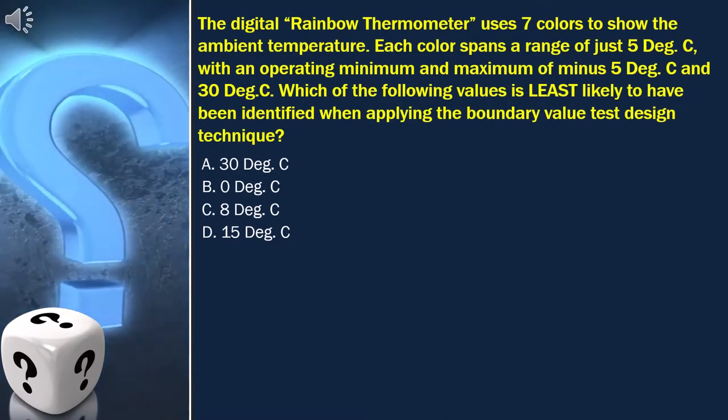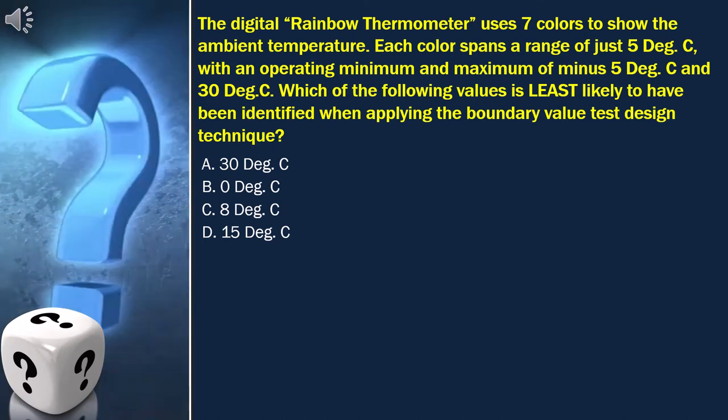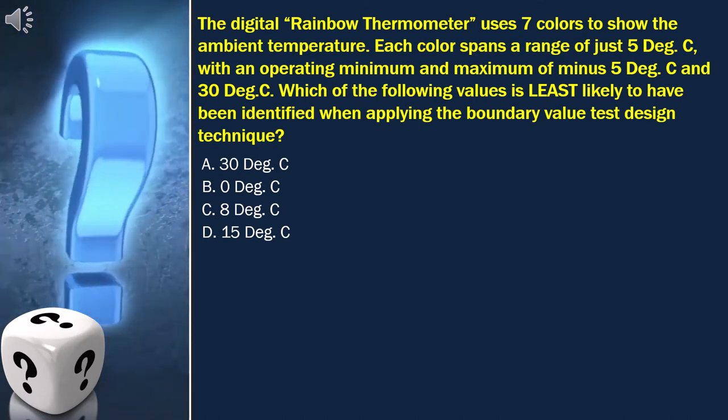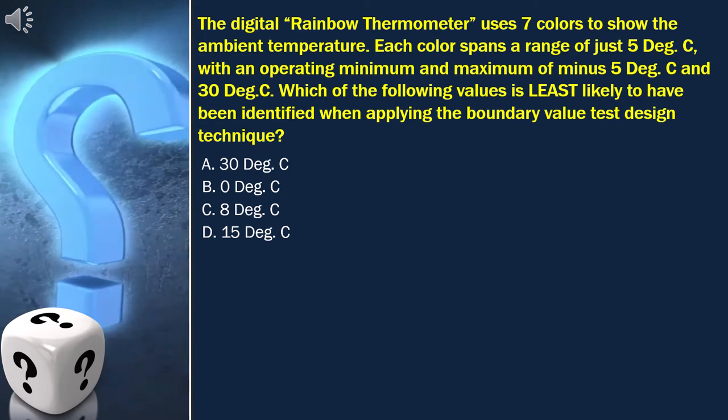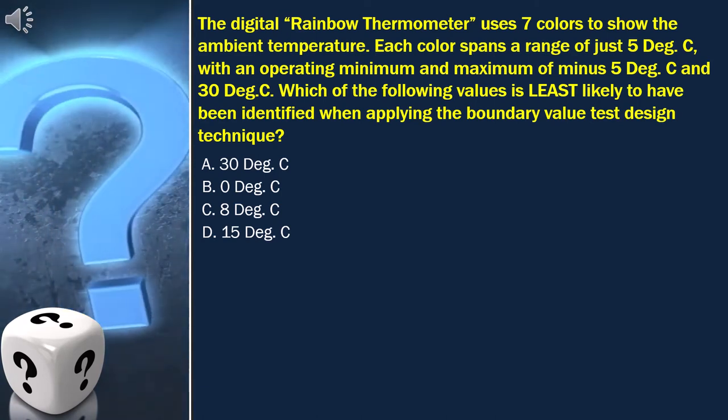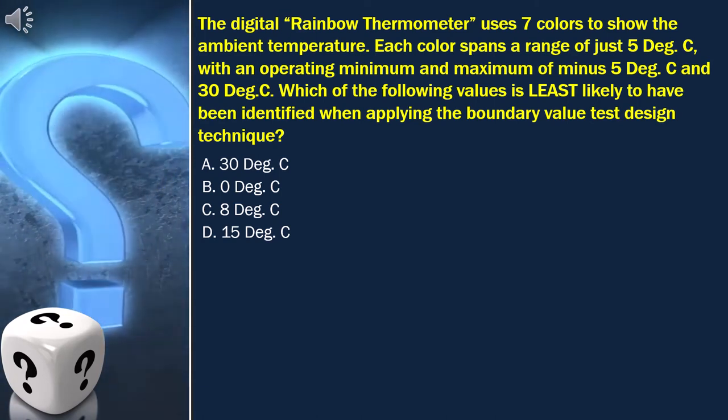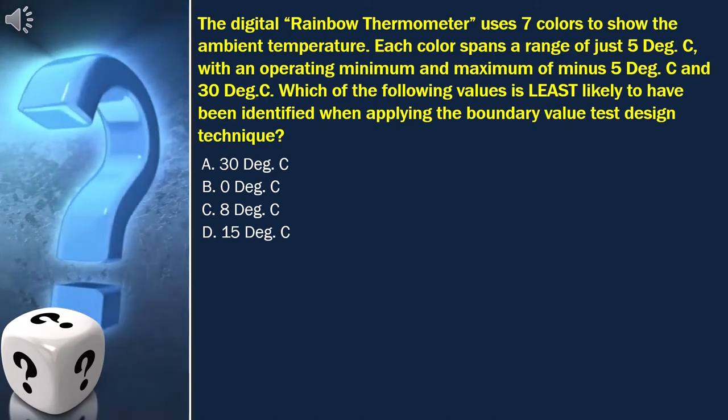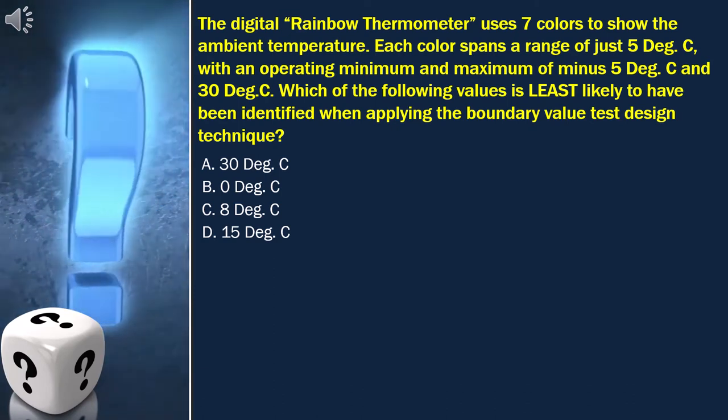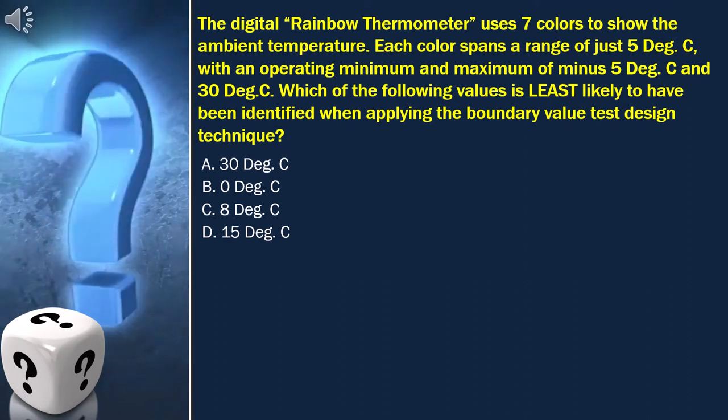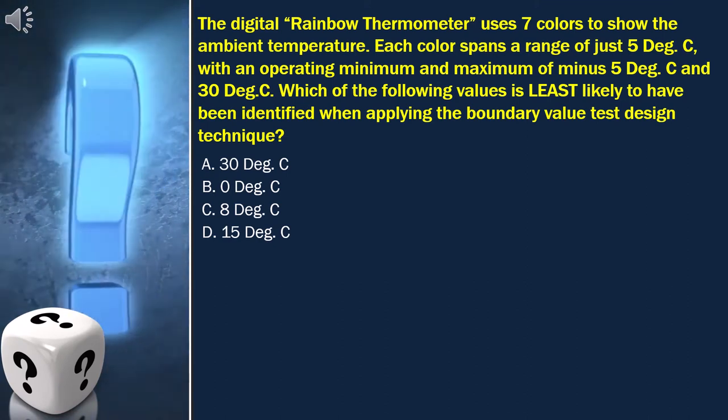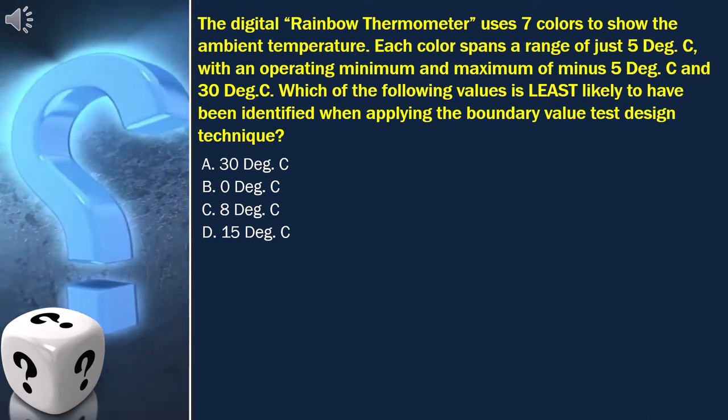Here, the question is: The digital rainbow thermometer uses 7 colors to show the ambient temperature. Each color spans a range of just 5 degrees Celsius, with an operating minimum and maximum of minus 5 degrees Celsius and 30 degrees Celsius.